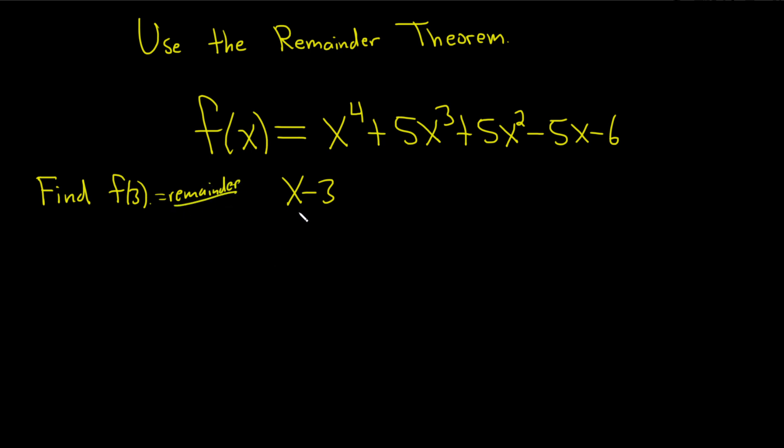So let's divide by x minus 3. Whenever you use synthetic division, the very first step is you switch the sign here. So this negative 3 becomes a positive 3 and then we put a little bracket here. And now we write down the coefficients of our polynomial function. So it'll be 1, 5, 5, negative 5, and then negative 6. And then we draw a line.